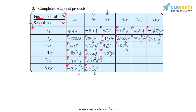The cell 3x² × 7x²y gives 21x⁴y, since 3 × 7 is 21 and x² × x²y is x⁴y; the symmetric cell is also 21x⁴y. Then 3x² × (-9x²y²) gives -27x⁴y², since 3 × (-9) is -27 and x² × x²y² is x⁴y²; the symmetric cell (-9x²y²) × 3x² is also -27x⁴y².